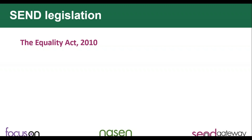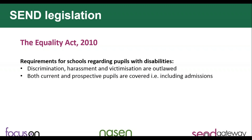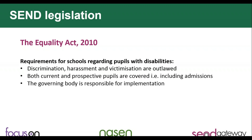There are certain requirements for schools under this Act regarding pupils with disabilities. First of all, the Act states that discrimination, harassment and victimisation are outlawed. The Act covers both current and prospective pupils — it means that schools have to consider the Equality Act when looking at admissions, as well as pupils currently in the school. They have to treat children with disabilities who are applying equally, and not show any discrimination. The governing body of the school is responsible for implementation of the Equality Act.